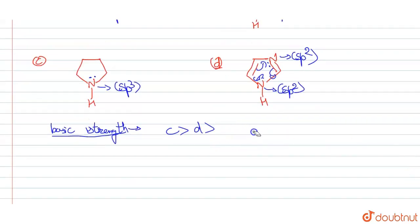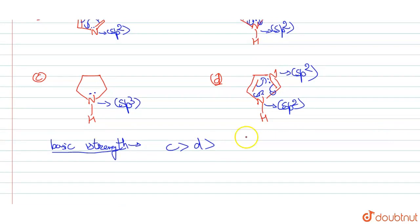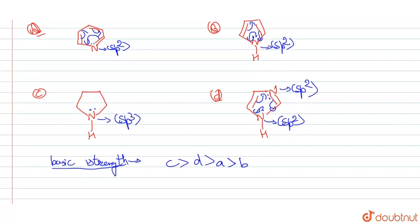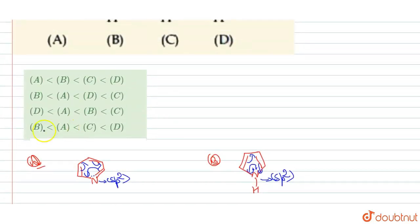A has a lone pair that does not participate in resonance, so A has more basic character than B. B has the least basic strength because its only lone pair is also in resonance. D has two nitrogen atoms — one with a localized lone pair and one delocalized — so D is more basic than A, and A is more basic than B because in A the lone pair of nitrogen is delocalized but not in resonance.